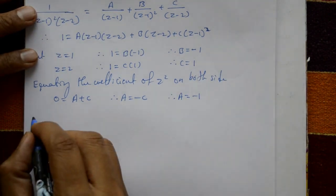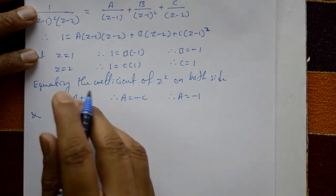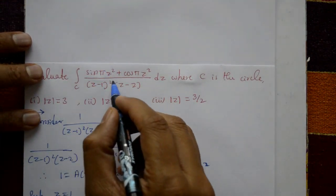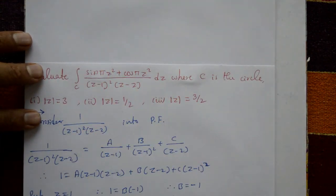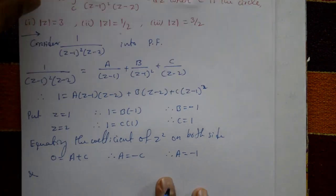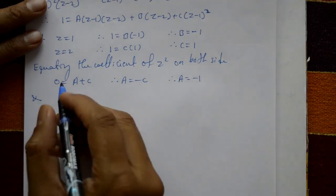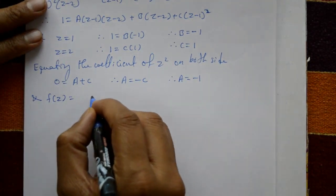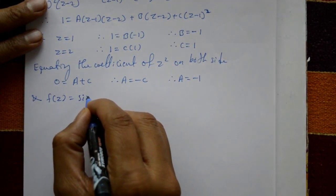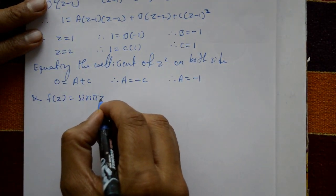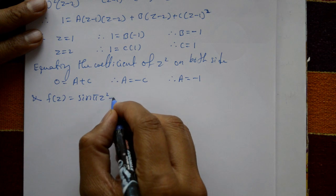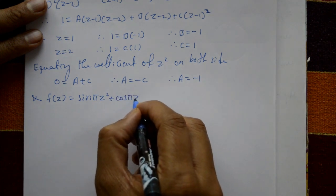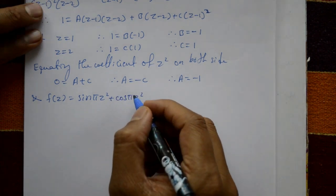Now define f(z) = sin πz² + cos πz². This is the function we will use with Cauchy's integral formula.